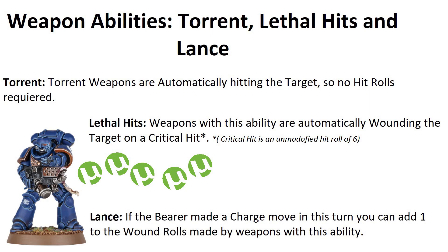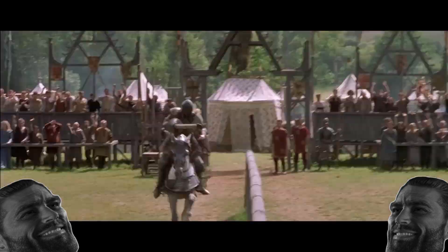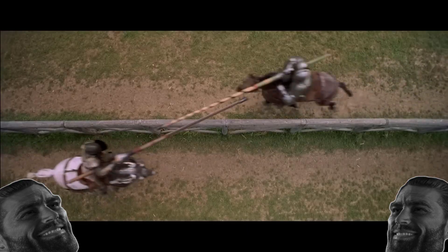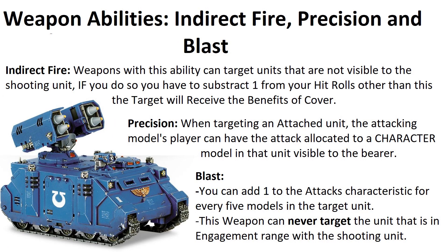Lance: when a weapon has the Lance ability, if you made a charge move this turn, you can add one to your wound rolls. Indirect Fire: weapons with this ability don't have to see the target they're shooting at — so you can shoot that unit hiding inside a building. Drawbacks: if shooting at a target you cannot see, subtract one from hit rolls, and the target benefits from cover even if not standing in cover directly.